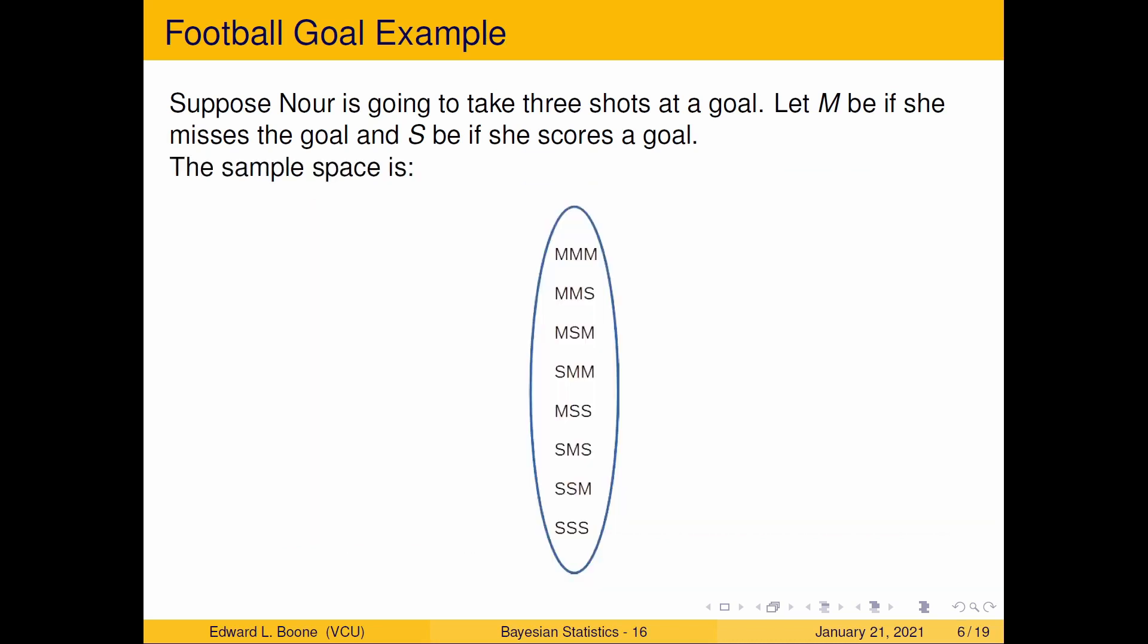Here's our sample space. We've seen this before. It's MMM, MMS, MSM, SMM, MSS, SMS, SSM, and SSS. That's a tongue twister.